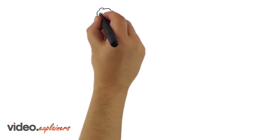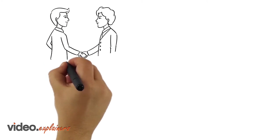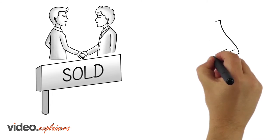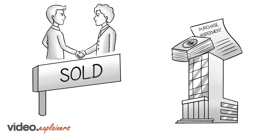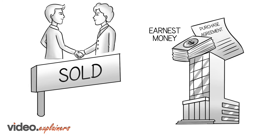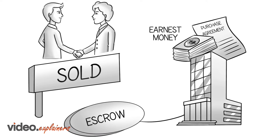Here's how it works. When a buyer and seller come to an agreement on the terms of the sale, called the purchase agreement, along with the buyer's deposit, called the earnest money, both are deposited with the escrow company, which opens escrow.